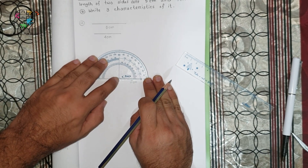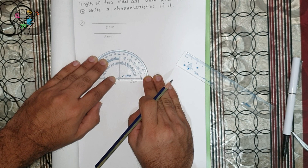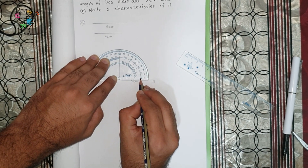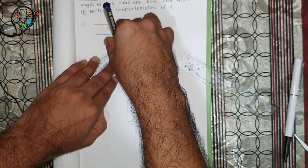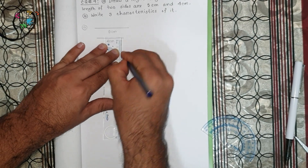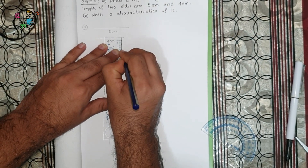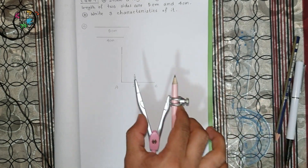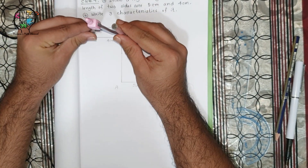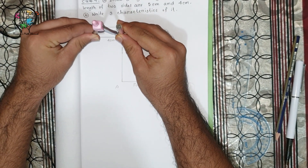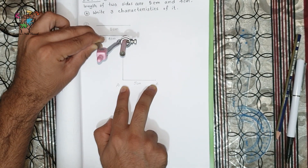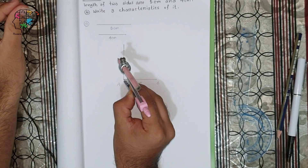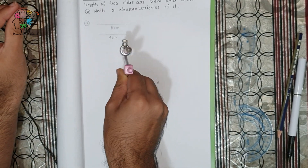Just match the middle corner point with corner point A, and then match the line we have drawn with 180 degrees or 0 degrees. Then mark the 90 degrees with pencil and connect this point and extend. Now with the help of this compass, take a measurement of 4 centimeters — because we have already drawn 5 centimeters — and pointing on A, cut 4 centimeters from the line.